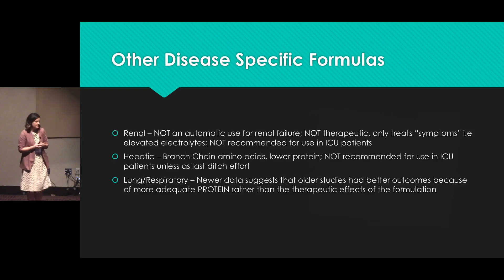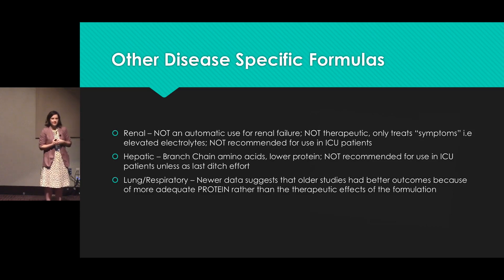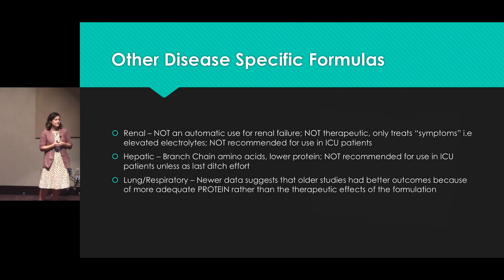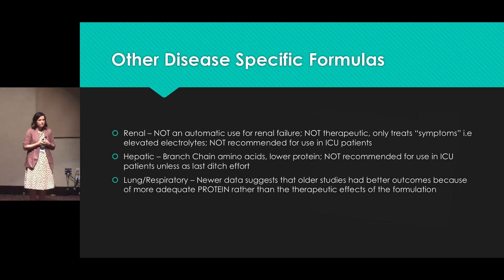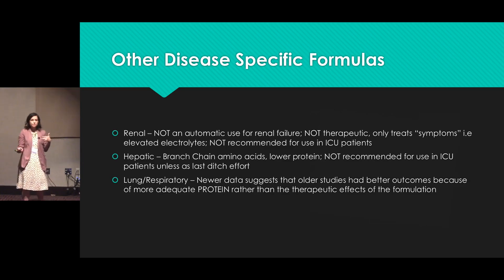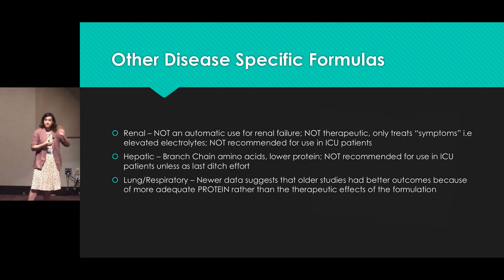Disease-specific formulas — this is one of my favorite things to talk about because it's super easy. There is no indication for the routine use of disease-specific formulas in critically ill patients. Most studies looking at renal formulas, for example, have shown no difference in electrolytes, BUNs, or renal function. They really aren't helpful in our critically ill patients, and what that means is it's usually not the nutrition causing that issue. Sometimes we may use one if we have a super high potassium and still want to get protein, but it's not automatic — we're really just treating symptoms.